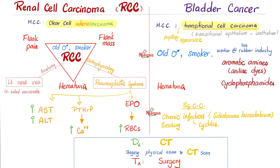Chronic bladder infection doesn't have to be schistosoma — any chronic, unresolved cystitis can be a risk factor, as is smoking. Diagnosis of these cancers includes history, physical exam, and imaging such as CT scan, ultrasound, and MRI. Staging is always physical exam and CT scan. Management is surgery and other options.